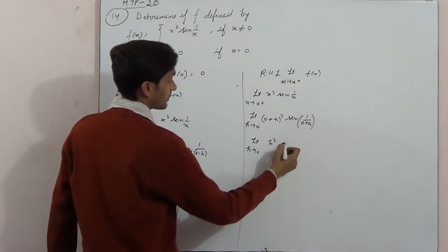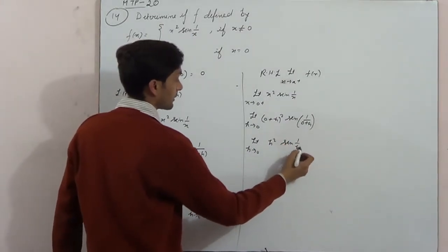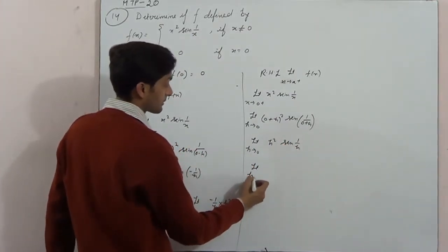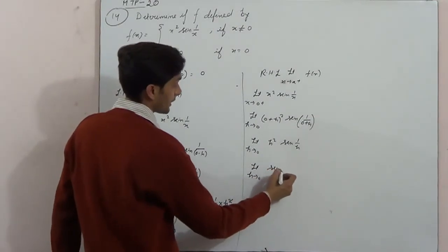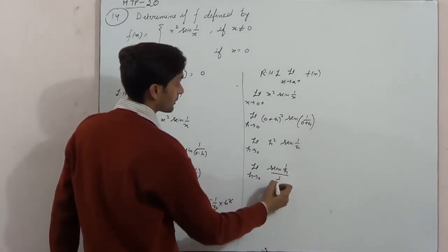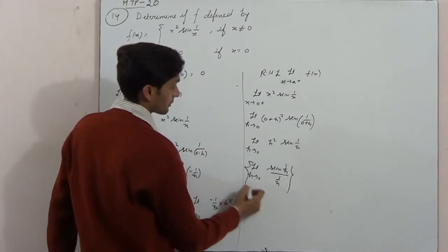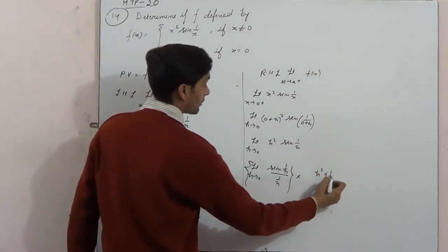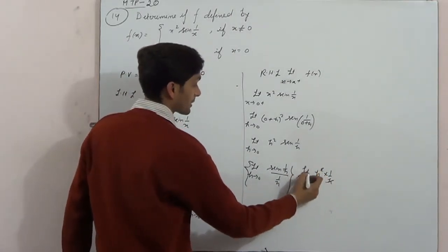Here h square, here sin 1 by h. Limit h tends to 0, sin 1 by h, niche bhi chahiye 1 by h. Into h square, 1 by h, here h will cancel.